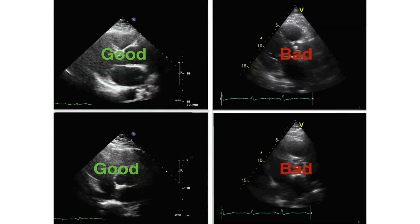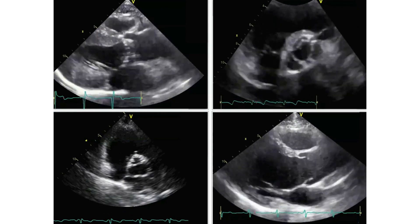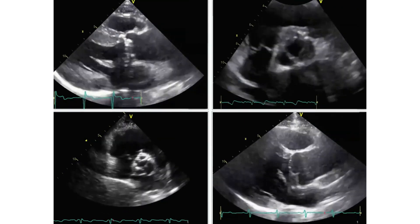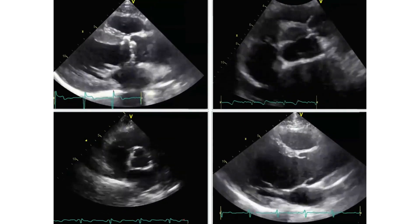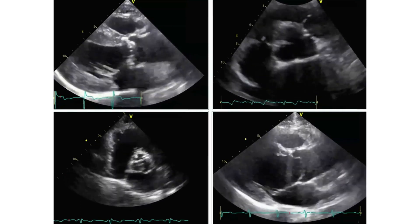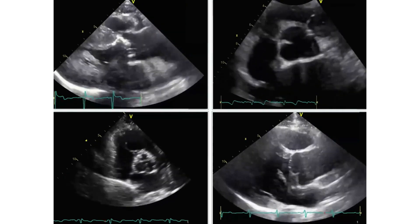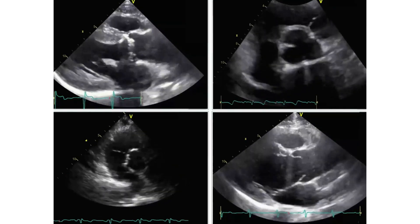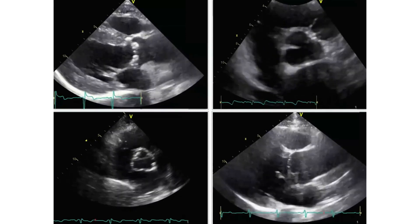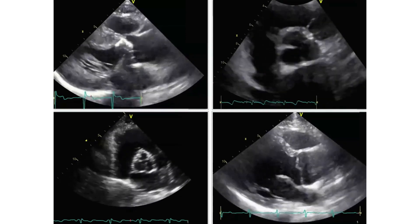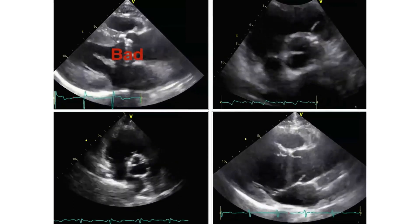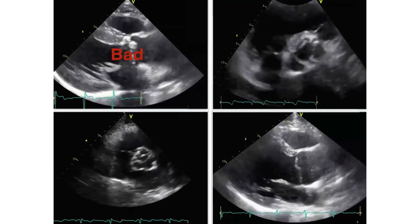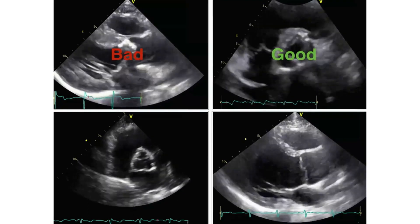And still some other examples for you. Again we have aortic valves in long and short axis. The first one — we see a lot of calcification, we cannot even distinguish the opening, so this is a bad valve. Next to it, a good valve.